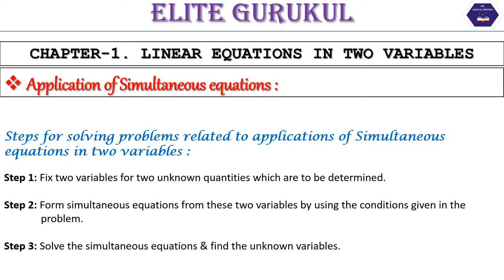So there are three steps. The first step is to fix two variables — we will fix two unknown quantities which we will determine and solve. Then we will form the simultaneous equations of these two variables, which we will use.